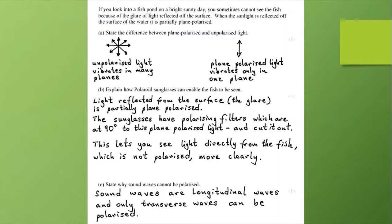Now let's read this question. If you look into a fish pond on a bright sunny day, you sometimes cannot see the fish because of the glare of light reflected off the surface. When the sunlight is reflected off the surface of the water, it's partially plane polarized.